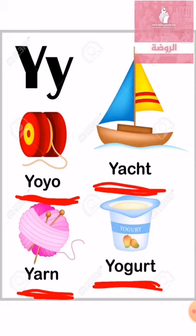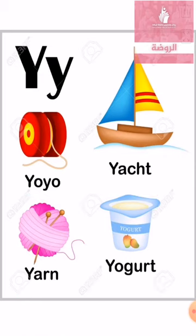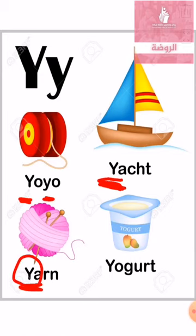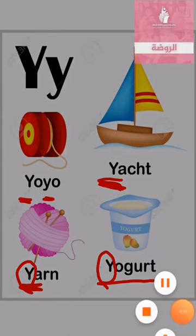The final one is yogurt. Now let's put a circle on the letter Y in each word. Yo-yo has two Y's — this is the first Y and this is the second Y. The second word, yet, has one Y at the beginning. The third word is yarn. And the final one is yogurt — this is the letter Y.